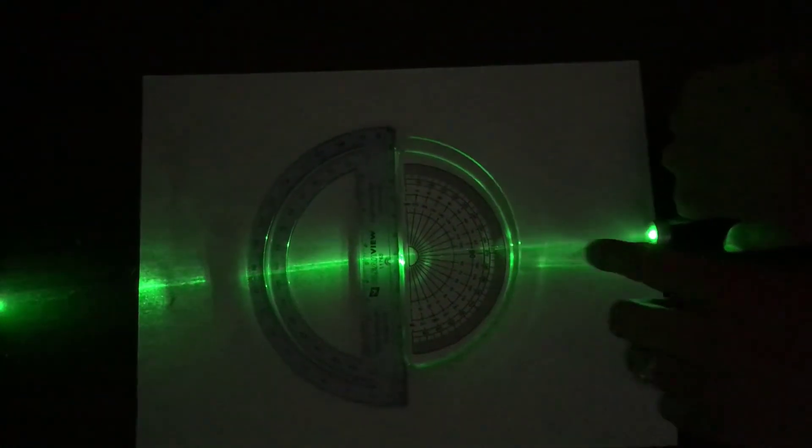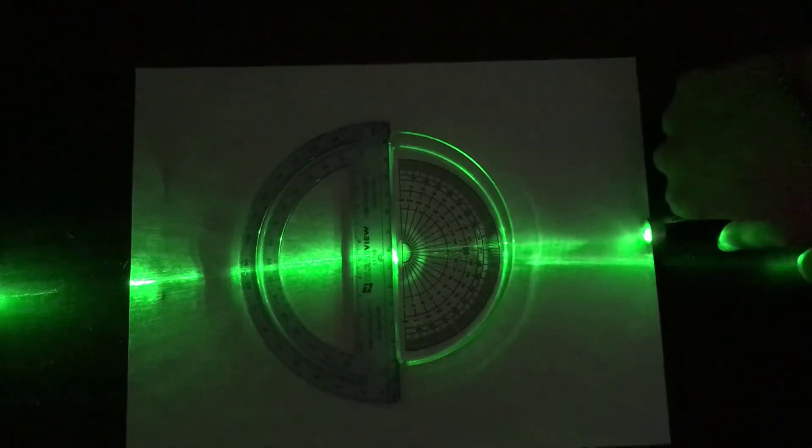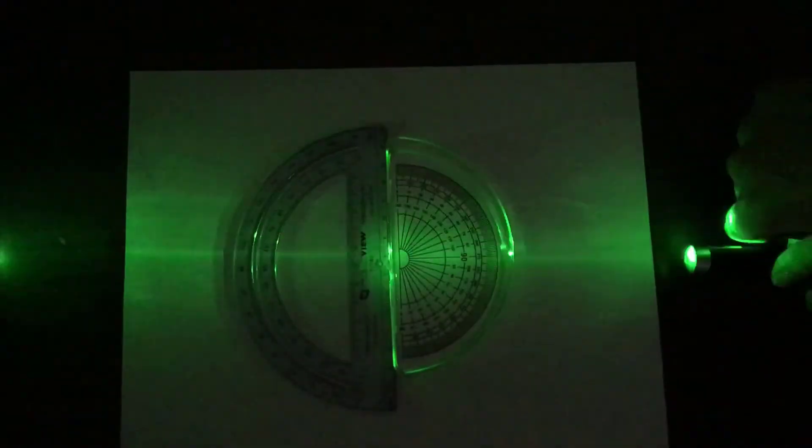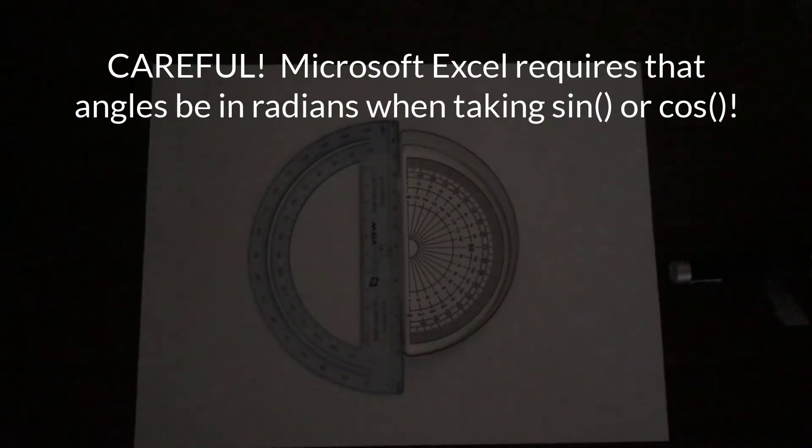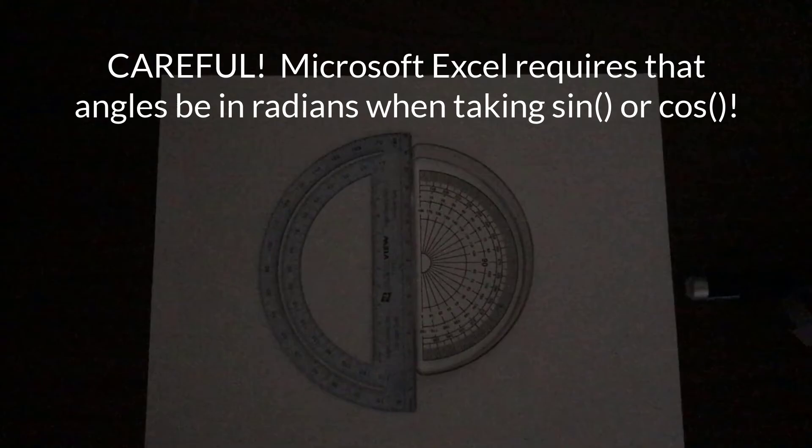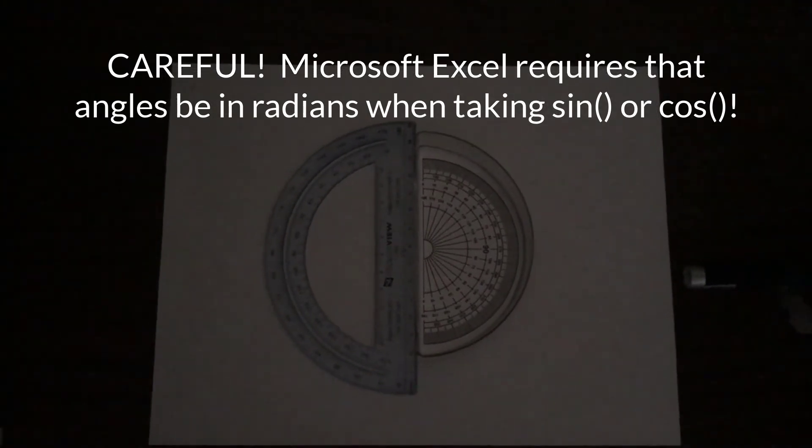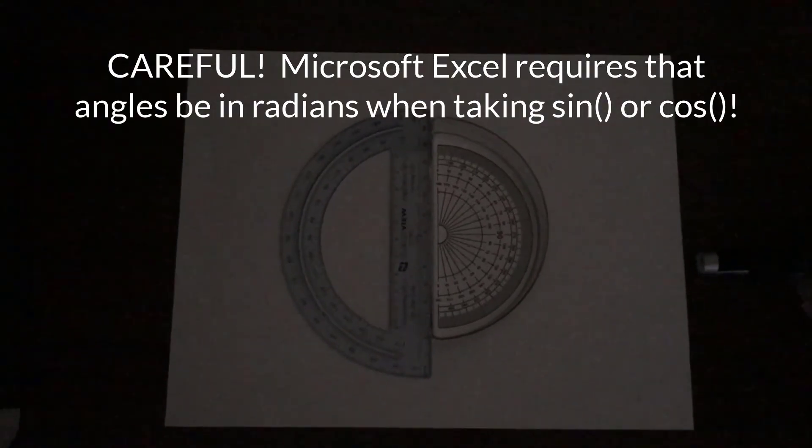Measure both the angle in and the angle out and you're going to end up plotting the sine of theta out versus the sine of theta in. Do this in order to solve for the index of refraction of the water. Compare that to theoretical value.